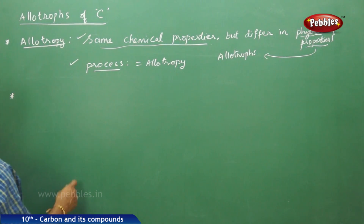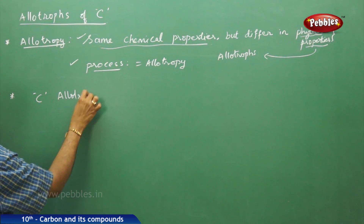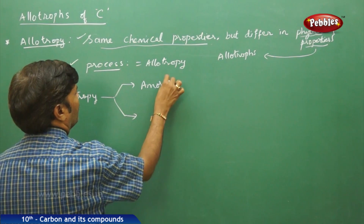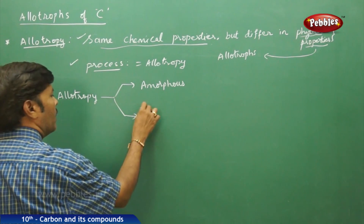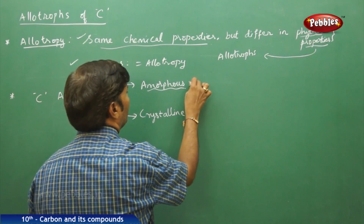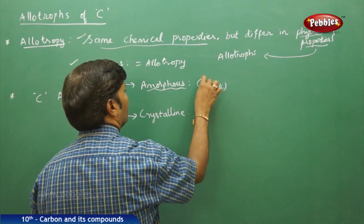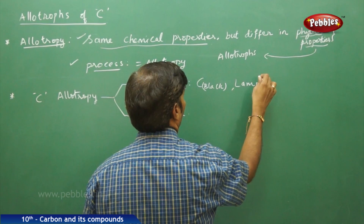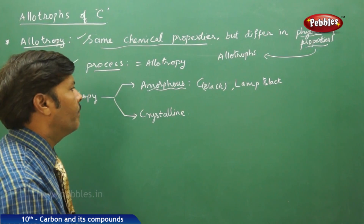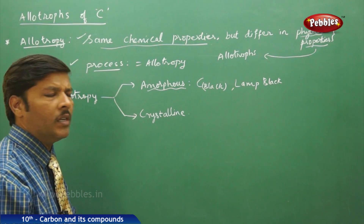If we take carbon in particular, it has two types of allotropic forms: amorphous and crystalline. If you go for amorphous carbon, plenty of examples you can take — carbon black, lamp black. These are the best examples of amorphous carbon.